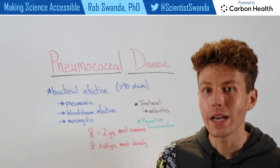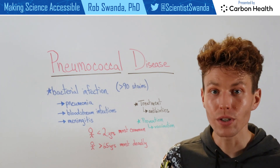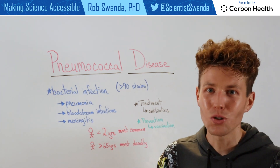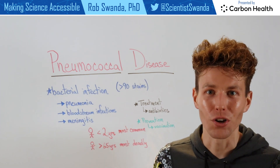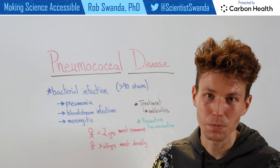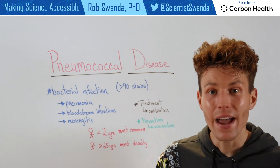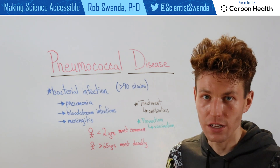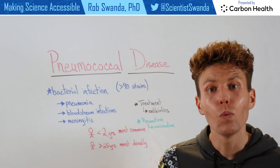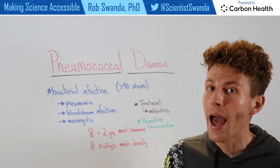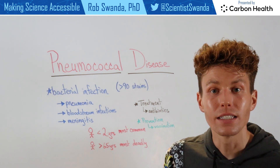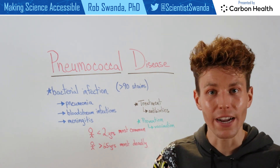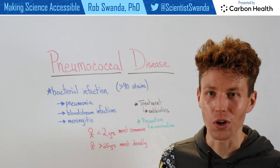However, the best way to actually treat pneumococcal disease is to prevent it from occurring in the first place, and that can be done through vaccination. So in our next video, we'll break down how exactly the different types of pneumococcal disease vaccines work.